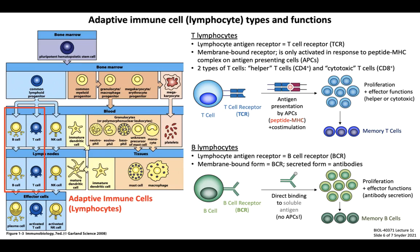B lymphocytes also express a lymphocyte antigen receptor, creatively named the B cell receptor, or BCR. The BCR can exist in two forms: the membrane-bound BCR, or a secreted form called antibodies — soluble molecules we've referred to several times in this course. Unlike the TCR, which can only bind to cognate antigen when presented by APCs, the BCR can bind directly to soluble antigen and does not require antigen presentation. Once the BCR is engaged, B cells rapidly proliferate into identical daughter cells expressing the same BCR specificity and execute effector functions, primarily fulfilled by antibody secretion. B cells can also present antigen to T cells. Just like T cells, a portion of activated B cells will differentiate towards a memory lineage to generate long-term memory B cells, forming a highly specific type of immunological memory — a central hallmark of adaptive immunity.